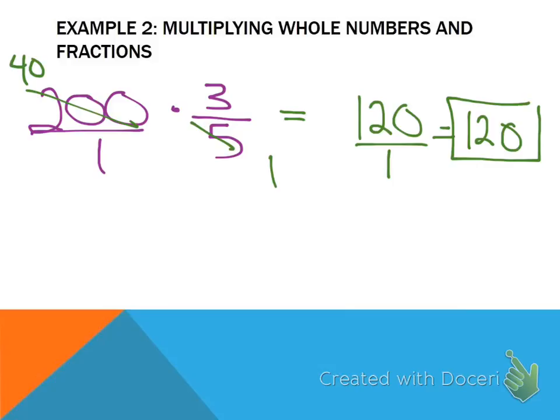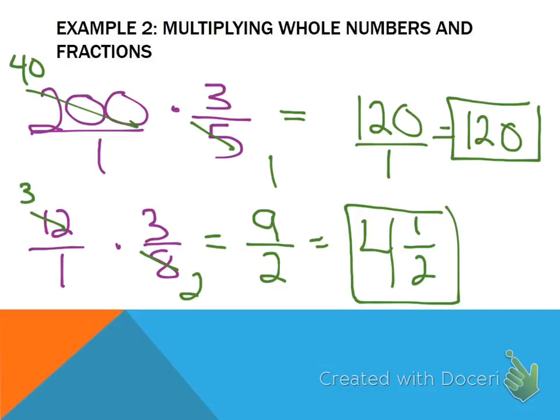So I want you to do this one: 12 times 3 eighths. And we make 12, 12 over 1. Can we cross reduce anything? Yep. 2 thirds. 9 over 2. But we don't leave it in improper. We need to change it to a mixed number. Very good.